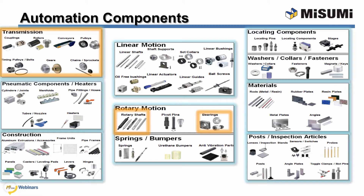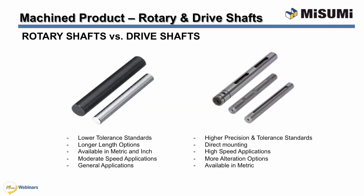Misumi also offers a wide range of supporting products such as bearings, housings, couplings, and many other rotary power transmission components to complement our rotary and drive shafts. Misumi rotary and drive shafts are offered in diameters ranging from 2 to 50 millimeters and lengths of up to 800 millimeters. Rotary and drive shafts share many similarities, but there are some key differences between the two.